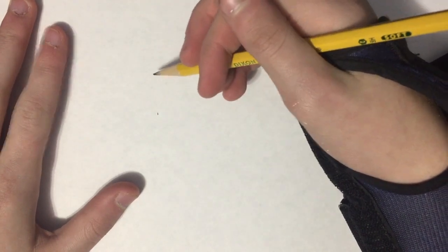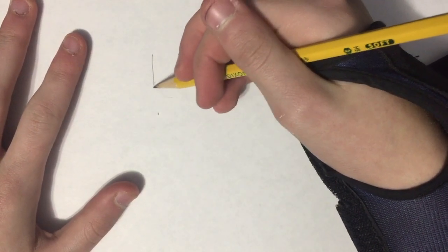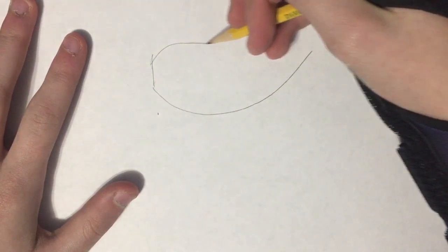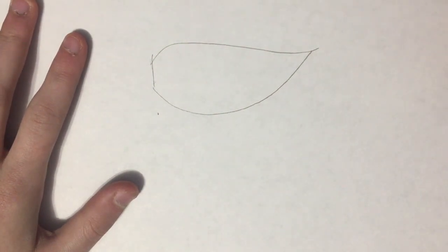Now first, we should start with his hair, like I always do. So we go, a bloop, and a bloop. Now, that's one side of his hair.